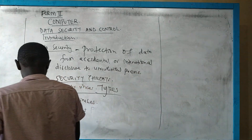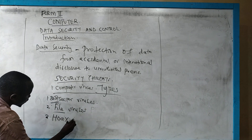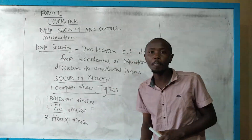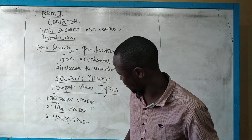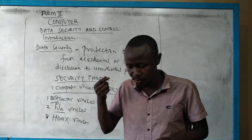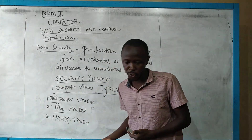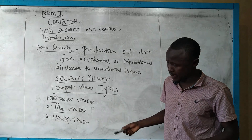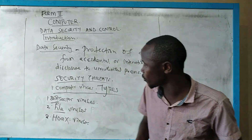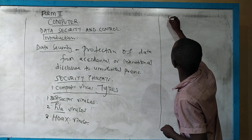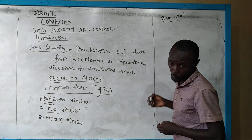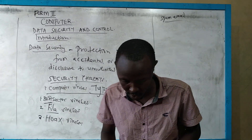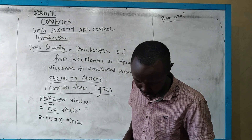We have the hoax viruses. These come as emails — very good-looking and very attractive emails. So you go to open an email and then you find that it is a virus, and when it attaches itself in your computer it will start skipping from this file to another one. The virus mostly comes as an email. You find that even in an email there are those emails that are marked as spam emails — when they suspect it might be a virus they will mark it as spam. So mostly hoax viruses come as emails.